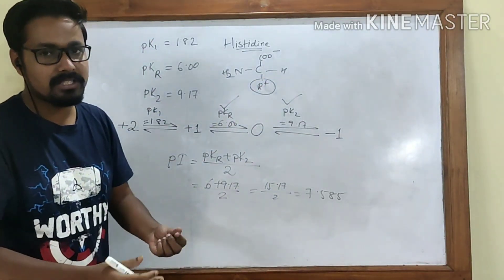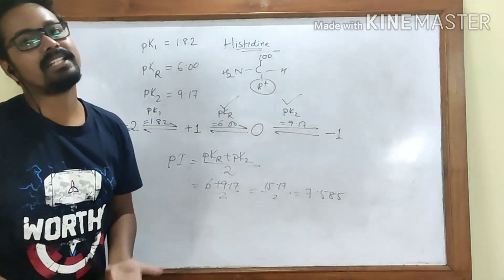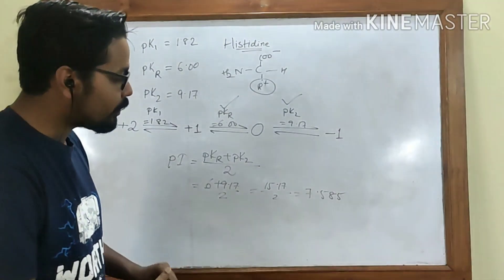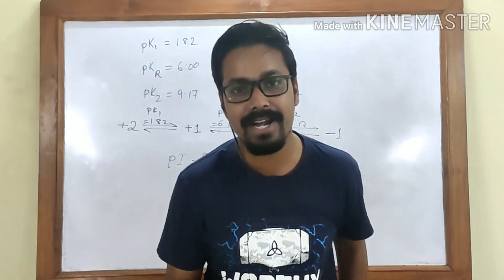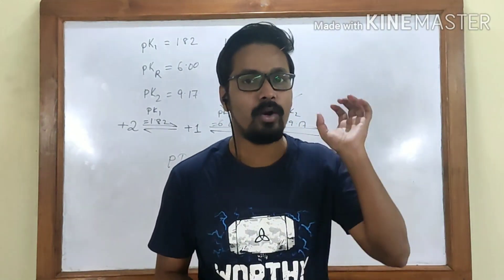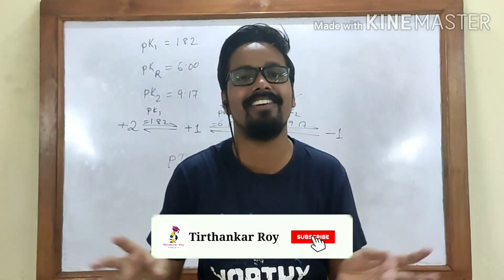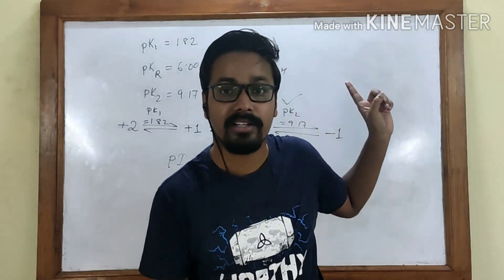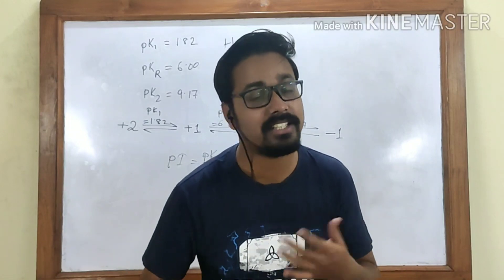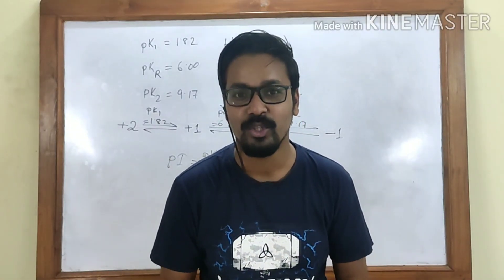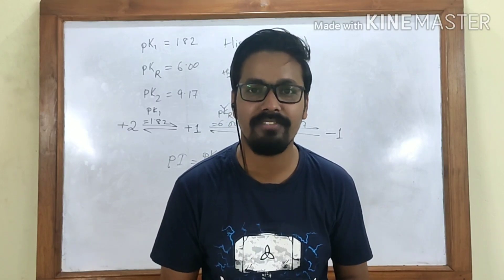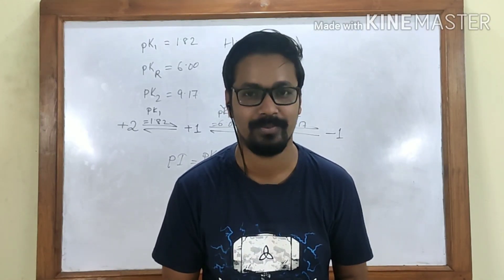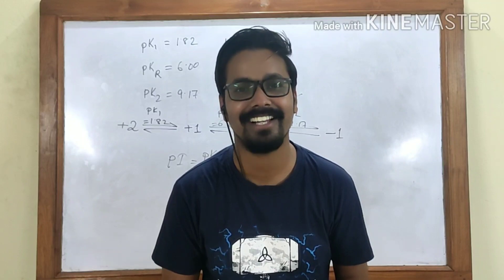In summary, to calculate pI: identify the two pKa values where one gives a charge of plus one and the other gives minus one, then take their average — that's the pH where the compound has zero net charge, which is the pI. That's all for today. Thanks for watching; do subscribe to the channel if you want more videos like this, and share it with friends who need it. Thank you everyone — cheers!